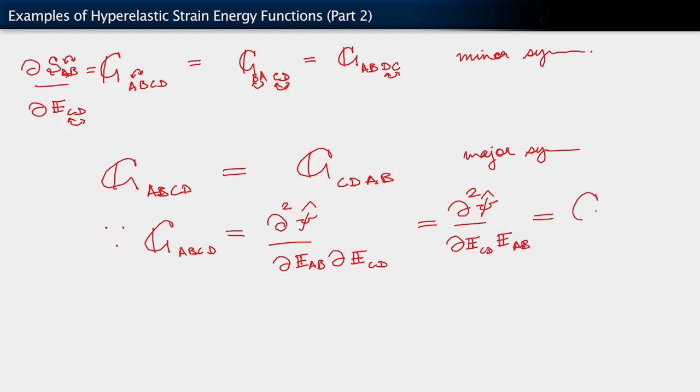And this is C_{cdab}. This holds if psi hat of e is smooth enough. And for the way we've constructed it, it indeed is smooth.